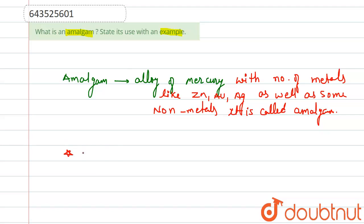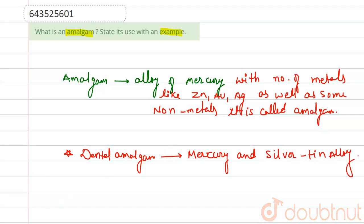So we have dental amalgam, which is used to fill the cavities in the teeth. It is actually a mixture of mercury with silver-tin alloy.